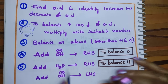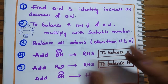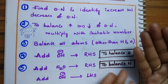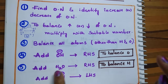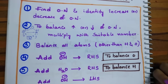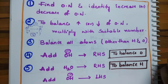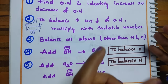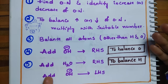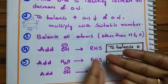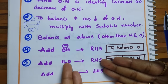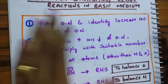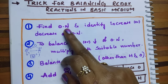After balancing oxygen, balance hydrogen. To balance hydrogen, add H₂O molecules to the deficient side. However, water consists of H⁺ and OH⁻ ions, so when you add water to balance hydrogen, you are also adding an extra OH⁻. Therefore, add the same number of OH⁻ ions to the opposite side. Because your right-hand side is deficient in hydrogen, you add water there, and add OH⁻ to the left-hand side.